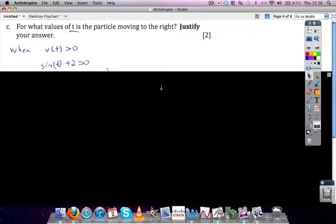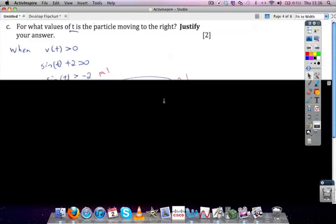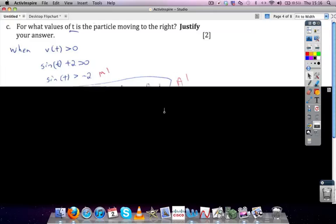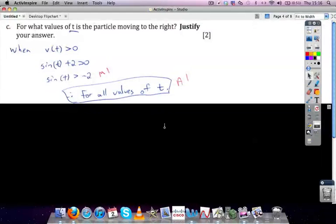So, this is our velocity function from the previous part, sine of t plus 2. When is that positive? It's positive whenever sine is greater than negative 2. So here's the justification. Sine is always greater than negative 2, so for all values of t.